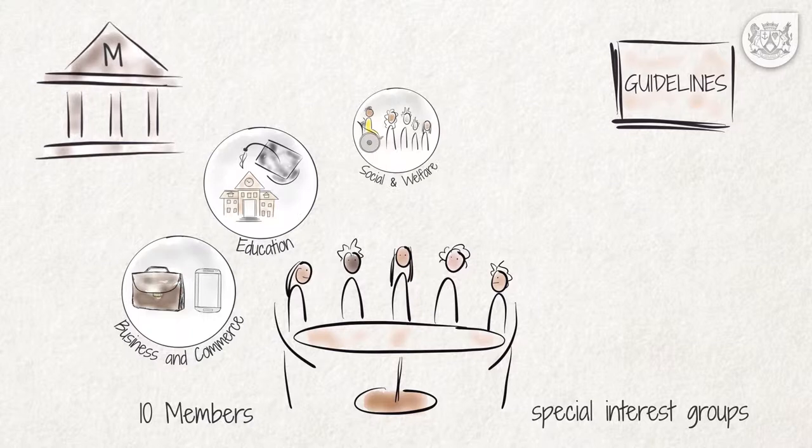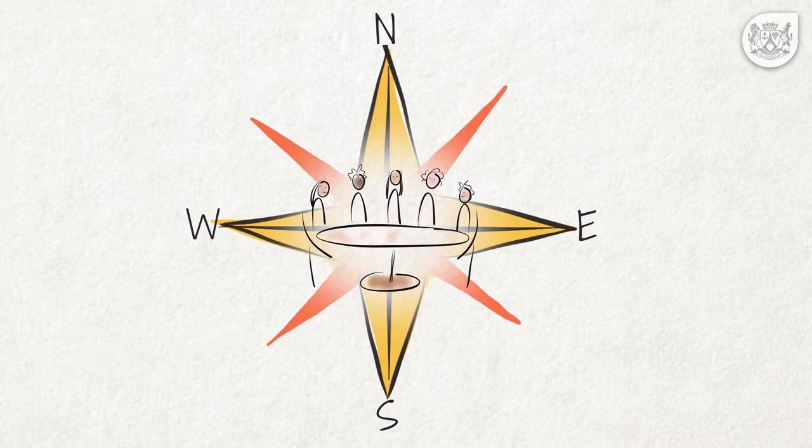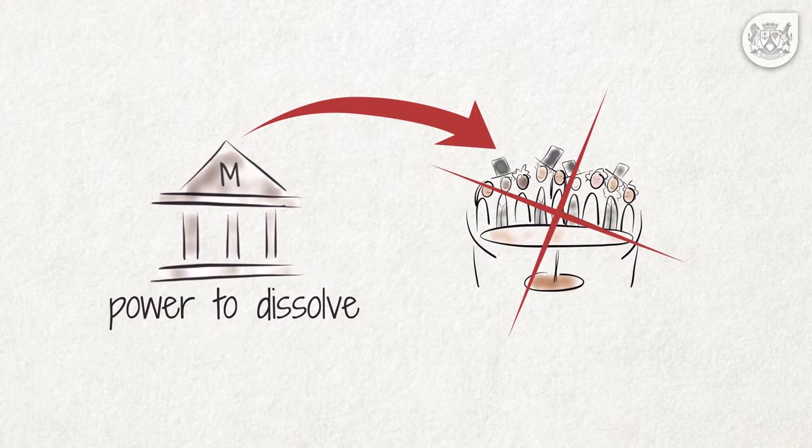social and welfare, youth, sport and recreation, and women's rights. Ward committee members may also be elected on a geographical basis, for example one from each of the eastern, southern, western and northern areas of the ward. The municipality has the power to dissolve the ward committee if it fails to fulfil its duties.